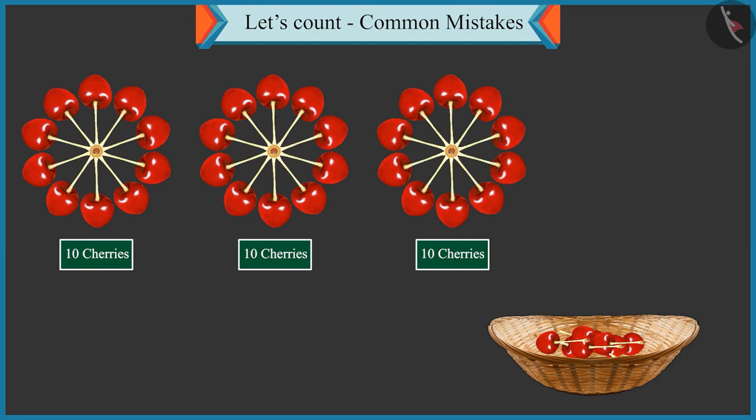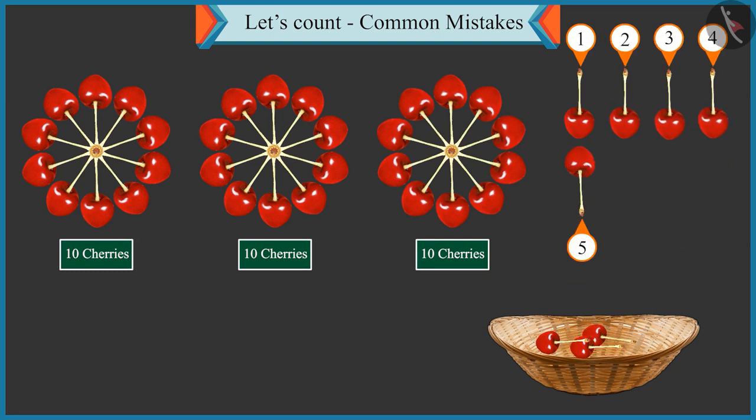Now let us count the remaining cherries. Counting: 1, 2, 3, 4, 5, 6, 7 and 8.